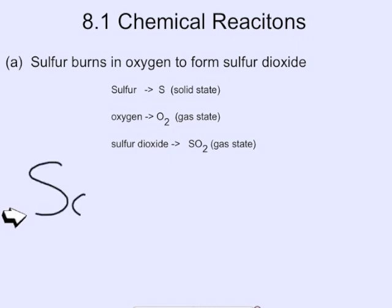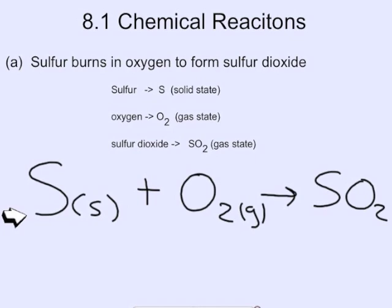So anything left now is to write this in chemical form. So sulfur you write S for solid and then we need to put a plus symbol and then O2 it's in the gas state. Yields, remember the arrow is yields, sulfur dioxide.